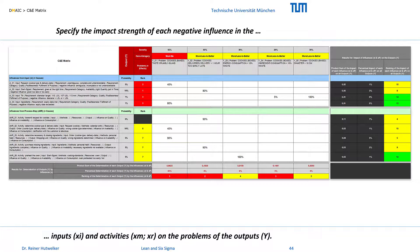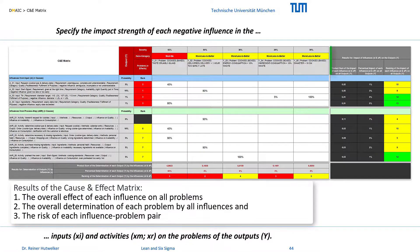After you have evaluated the X-Y relationships, SigmaGuard offers three results. First, the overall effect of each influence on all problems. Second, the overall determination of each problem by all influences. And third, the risk of each influence-problem pair.